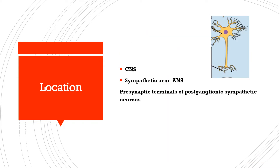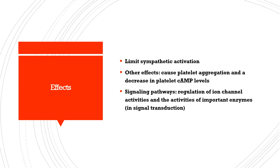Alpha-2 receptors are found in the central nervous system and the autonomic nervous system — specifically within the sympathetic arm, at the presynaptic terminals of the postganglionic sympathetic neurons. Their purpose is to limit the release of norepinephrine.